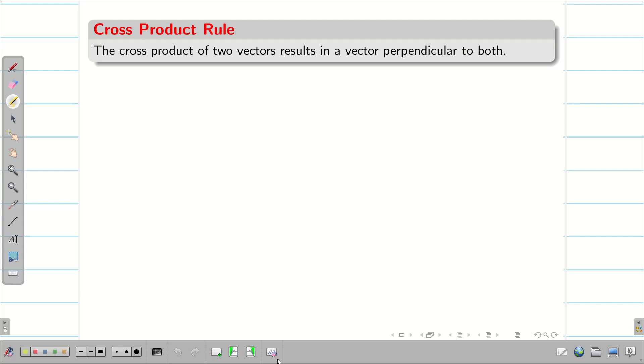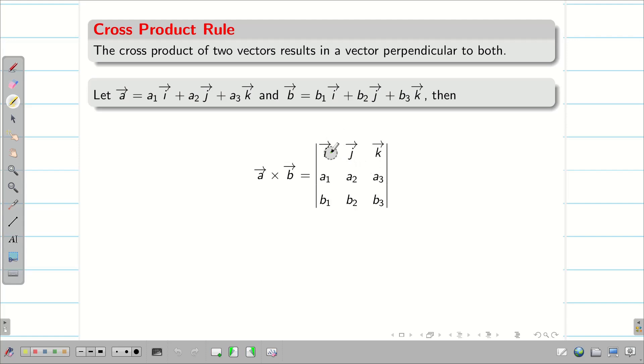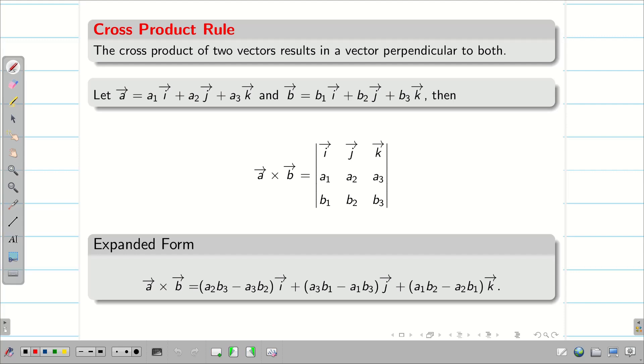Cross product rule. How to find cross product when two vectors are given to us? We take the same a and b vectors. It is going to be first row i, j, k. Second row, coefficients of i, j, k with respect to a vector. The third row is coefficients of i, j, k for b vector. You have to expand this determinant. So, you can see this a cross b vector expansion.